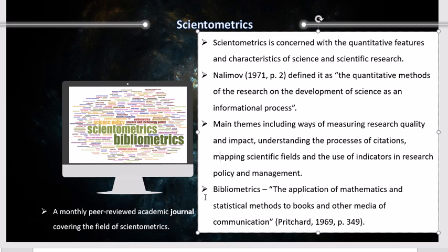There are some fields that overlap with Scientometrics. One of the most famous ones which has been cited and referred to in the field of applied linguistics is Bibliometrics. Bibliometrics has been defined as the application of mathematical and statistical methods to books and other media of communication. Bibliometrics is not the only branch that overlaps with Scientometrics, but I have specified it here because it has been used in applied linguistics.